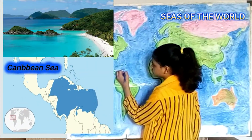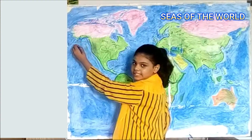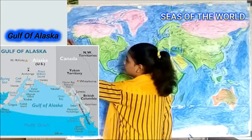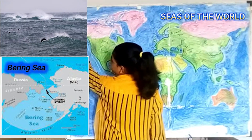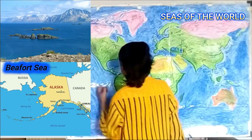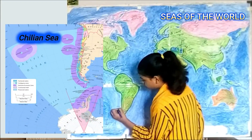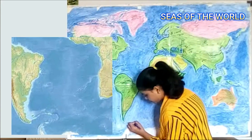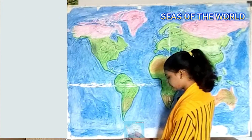Here is Gulf of Alaska. Here is Brink Sea. Here is Bacord Sea. Here is Sillian Sea. Here is Sipotiya Sea. Here is Varen Sea.